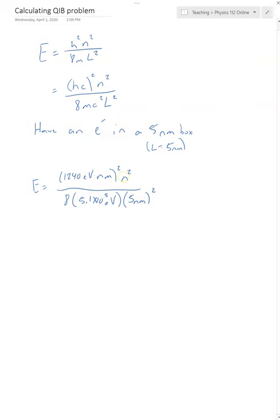So if I plug that all in to my calculator, which of course I smartly got ready ahead of time, we just get 1240 squared divided by 8 divided by 5.1e5 divided by 5 squared.